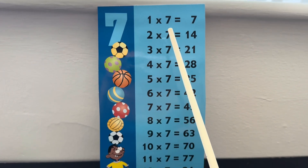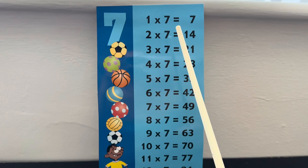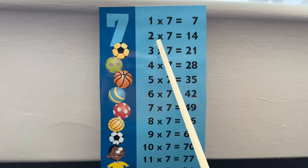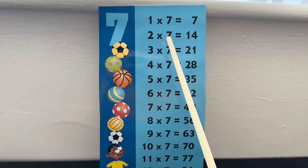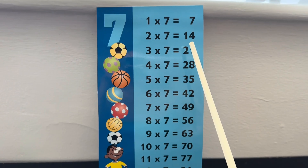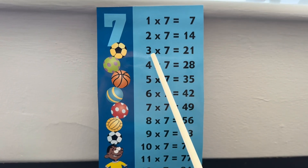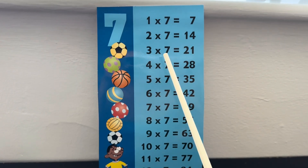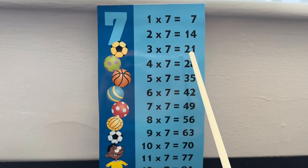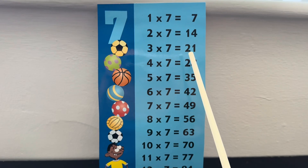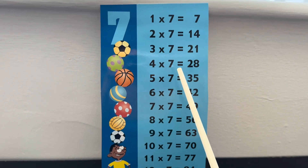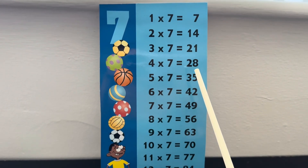1 times 7 is equals to 7. 2 times 7 is equals to 14. 3 times 7 is equals to 21. 4 times 7 is equals to 28.